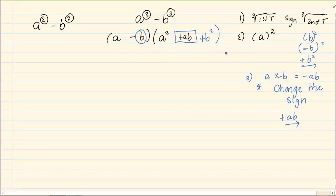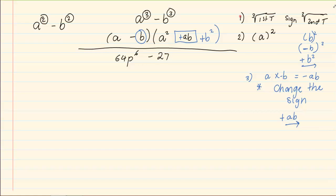Let us do another example. 64p to the power of 6 minus 27. The first step, we're going to cube root the first term and we are going to cube root the second term. Now the cube root of 64 is 4. What is the cube root of p to the power of 6?